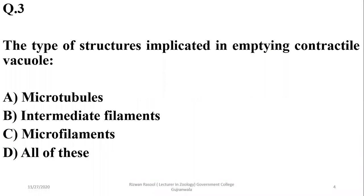Question three: the type of structures involved in emptying contractile vacuoles are microfilaments. Microtubules form pellicle structures, and intermediate filaments may be present as internal support of the cell. So the correct option is C.